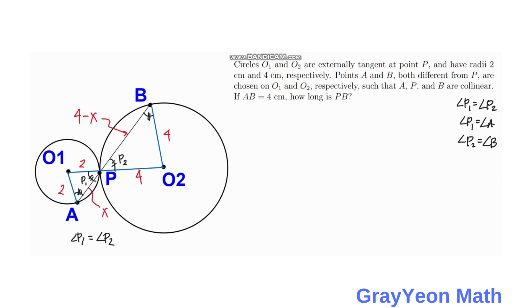Next thing is we observe that by transitive property since angle P1 is equal to A and angle P2 is equal to angle B. If P1 is equal to angle A and if P1 is equal to P2, then angle P1 we can replace that with angle A and angle P2 can be replaced by angle B. So we can say that angle A is equal to angle B.